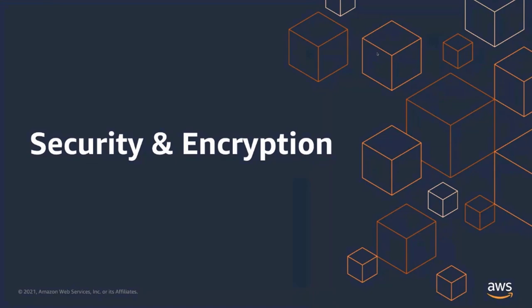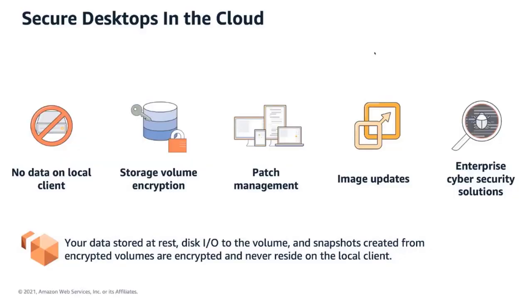Now let's get into the security and encryption aspects. Security is job zero at AWS — it's more important than any number one priority that we have. AWS wants to ensure your Workspaces are secure. Since they are deployed within Amazon Virtual Private Cloud, we can securely provide access to persistent and encrypted storage volumes, which are integrated with AWS Key Management Service. KMS is a fully managed service that uses highly scalable hardware and software to provide you with the encryption keys, scaled for the needs of a cloud. Workspaces client does not store any of your user data on the local device. This improves your security posture while reducing your blast radius, or overall risk surface area. Amazon Workspaces supports encryption of both root volume and user volumes.